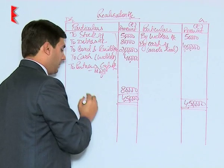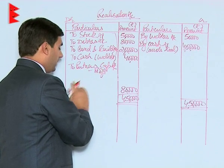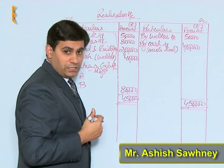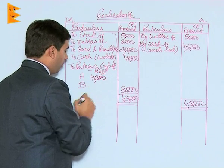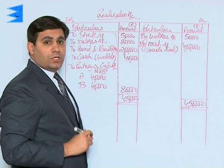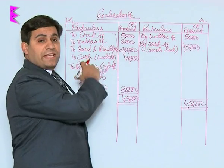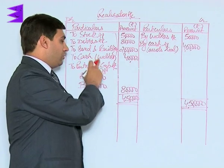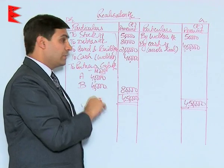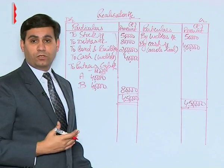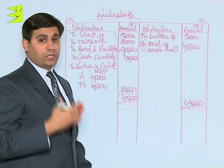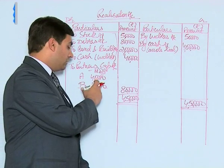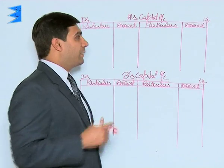The realization account totals ₹4,50,000 on both sides. This profit of ₹80,000 has to be divided among partners A and B in their profit sharing ratio. Since no ratio was given, we assume it to be equal — so ₹40,000 for A and ₹40,000 for B. To recapitulate: assets and liabilities are transferred to realization account; realized amounts go on the credit side, payments on the debit side, and the balance is profit or loss, adjusted into partners' capital accounts.